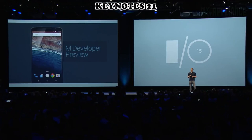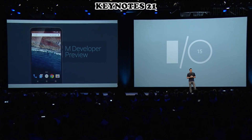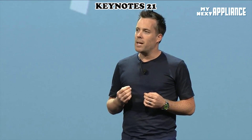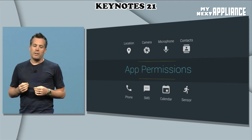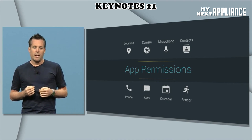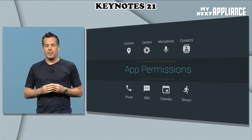The central theme of M is improving the core user experience of Android. We're excited to fold in some of these improvements that we've seen in the ecosystem into the official Android platform. Apps will now ask you for permission the first time you try to use a feature, instead of asking during app installation time.